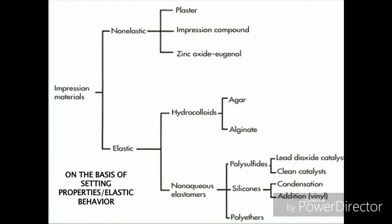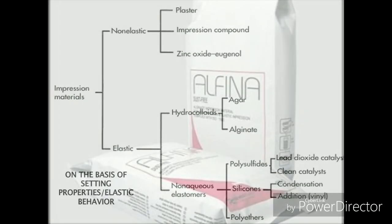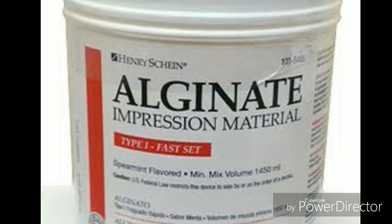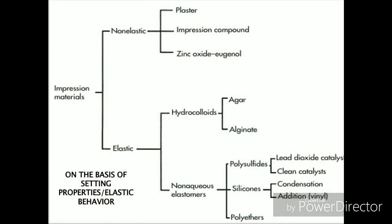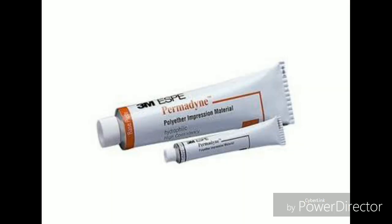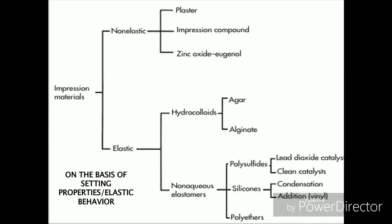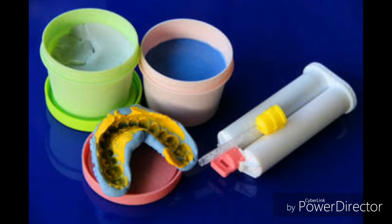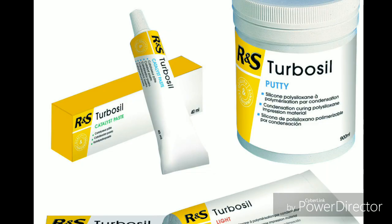The elastic impression materials are divided into two types: hydrocolloids and non-aqueous elastomers. Agar and alginate are the hydrocolloids; agar is a reversible impression material whereas alginate is an irreversible impression material. The elastomers, also called rubber-based impression materials, are of three types: polysulfides, silicones, and polyethers. Silicones are further divided into two types based upon the polymerization reaction — addition silicones or condensation silicones.